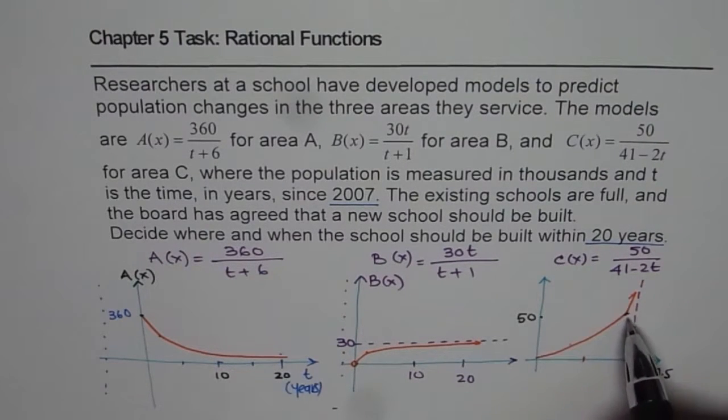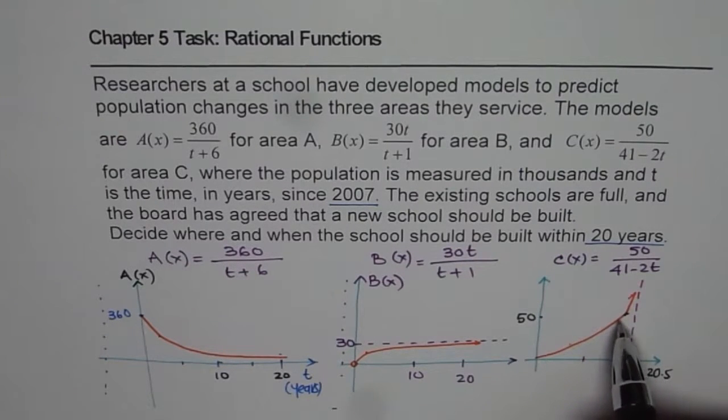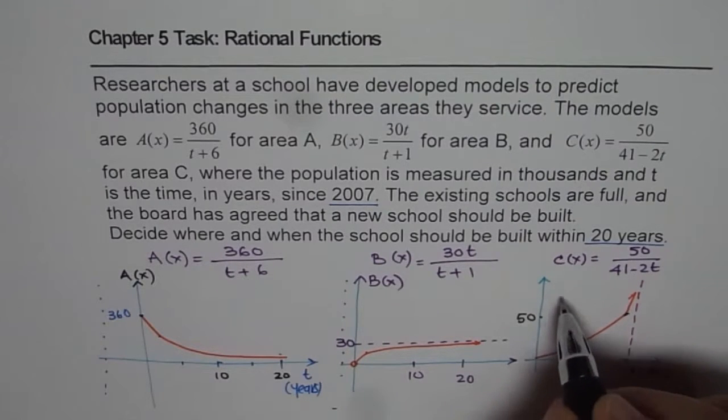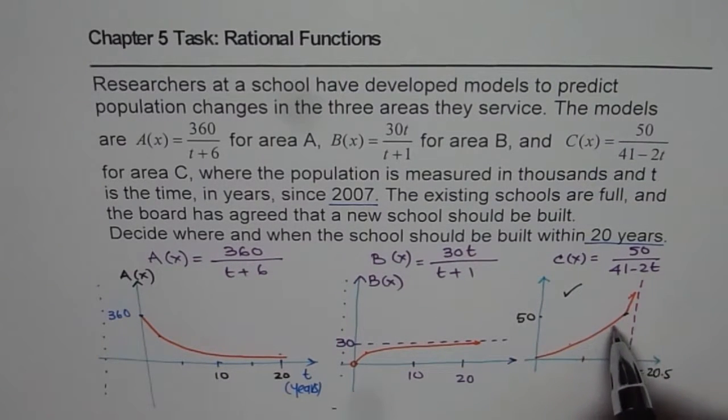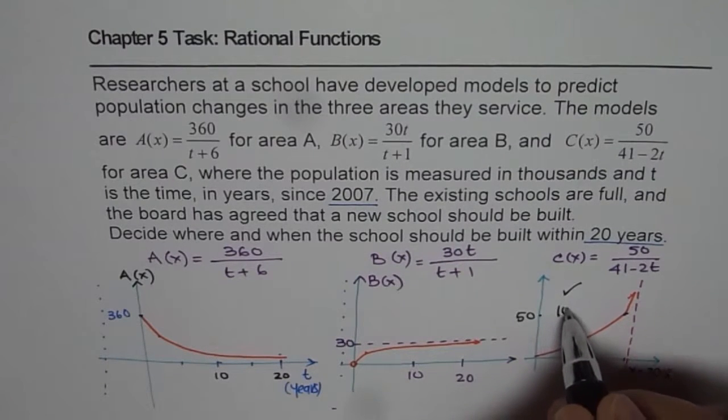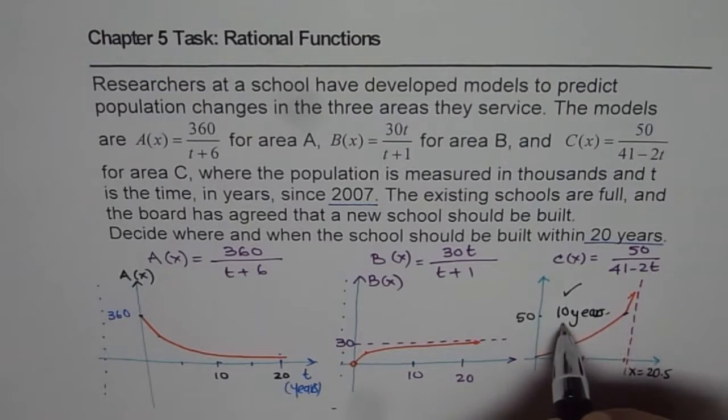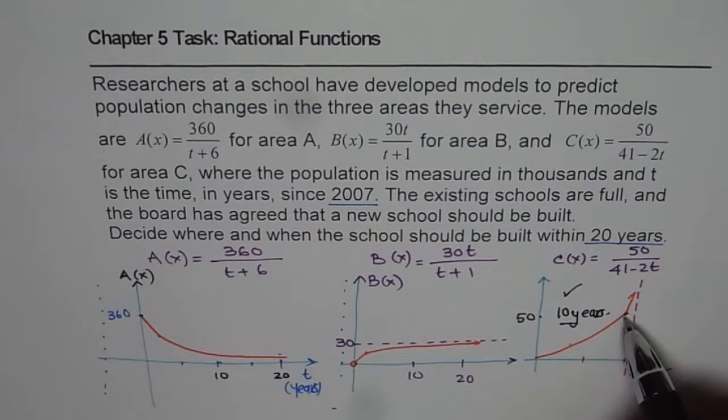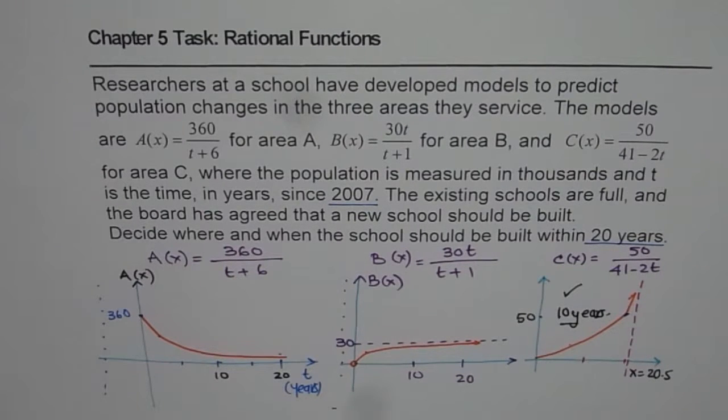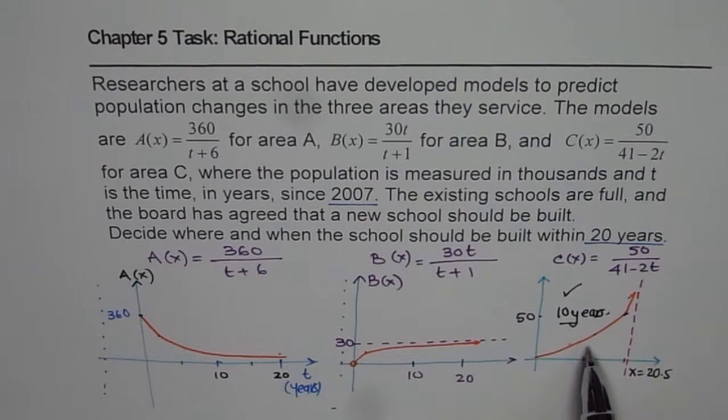But in C, it is going to explode in 20 years. So we should definitely build the new school near area C. So this is the area of our choice. And it should be done well before 20 years, since that will be unmanageable. So we will expect if it is done within 10 years, it will be a good proposition for the time being. But surely, after 20, we have a break. So we should do it at 10 years. Then it is kind of manageable.